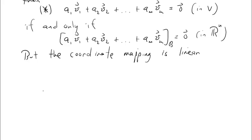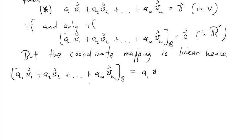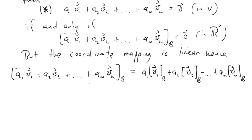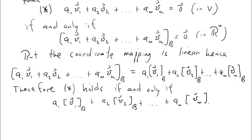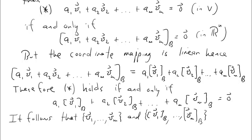Now we note that the coordinate mapping is a linear transformation. Hence, we can rewrite the coordinate vector corresponding to the sum as a1 times v1 sub b, plus a2 times v2 sub b, all the way down to a sub m times vm sub b. That uses the fact that linear transformations are additive and homogeneous, so we can distribute the coordinate mapping and pull the constants a1 down to am out in front. Therefore, star holds if and only if a1 times v1 sub b plus a2 times v2 sub b, all the way down to am times vm sub b equals 0 in Rn.